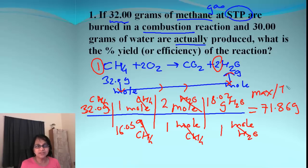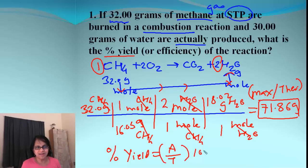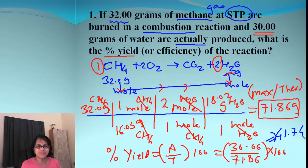Remember, this 71.86 grams is the maximum yield — the theoretical yield found using stoichiometry. Now we find the percent yield. The formula is: actual yield divided by theoretical yield times 100. The actual yield is 30.00 grams and the theoretical yield is 71.86 grams. Multiplying by 100, we get 41.74 percent.